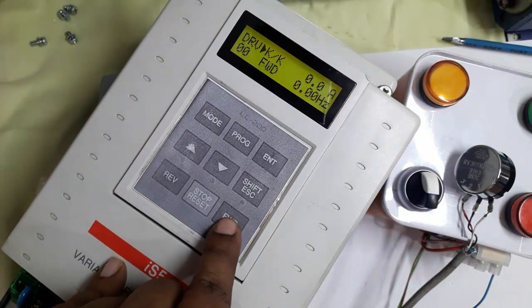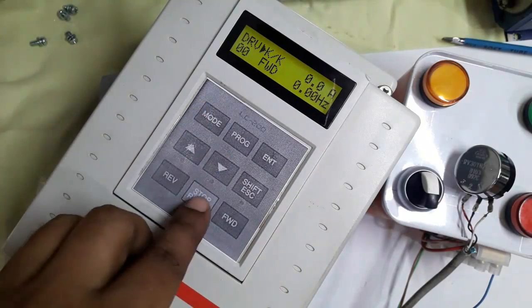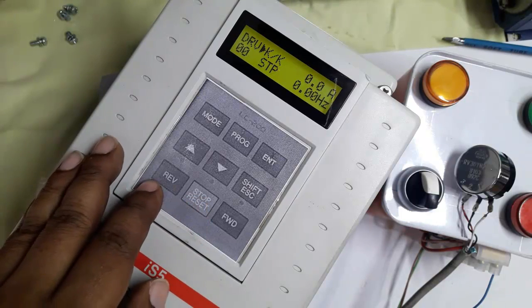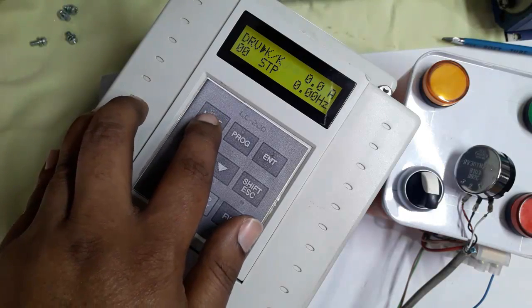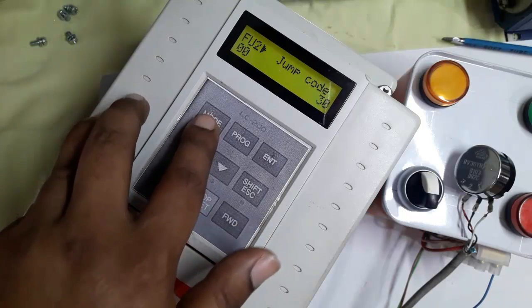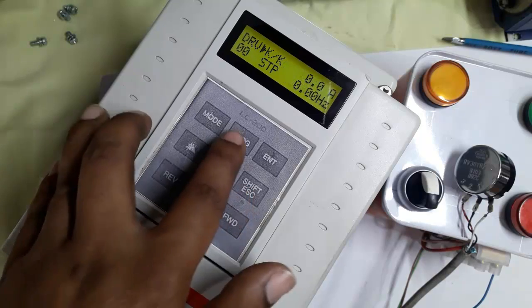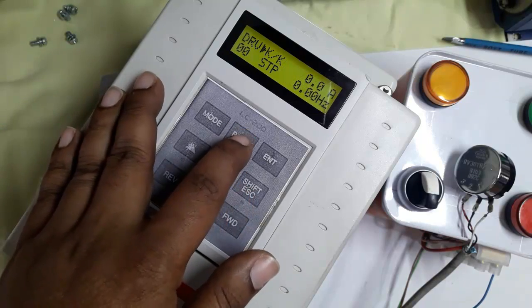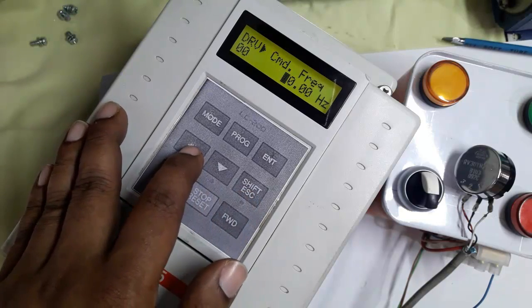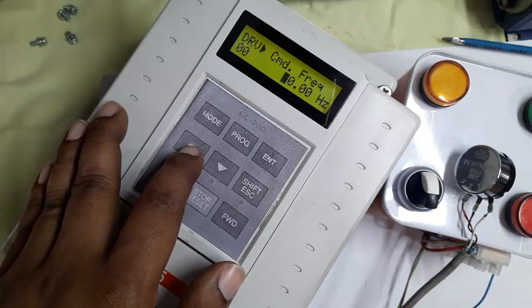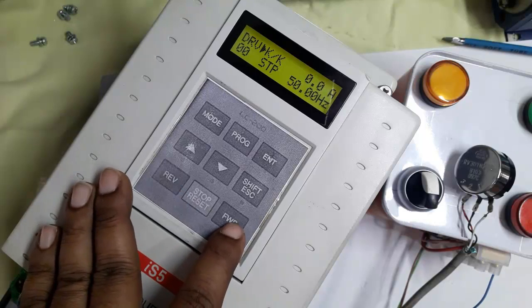So now we run by press forward button and it's running but did not show frequency, so need to change frequency. Stop and now we changing frequency by keypad. So press program button for a changing frequency from 0 to as per our requirement. Click program button. Here frequency command 0, so we set here 50 Hertz, that's mean its maximum speed is 50 Hertz.